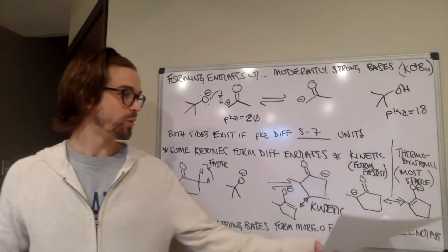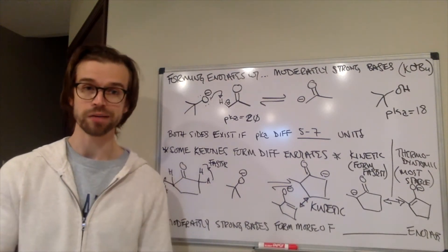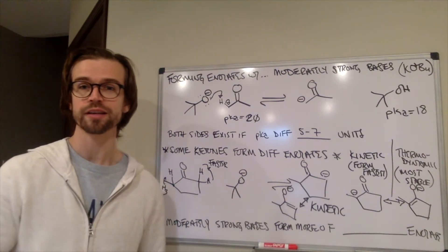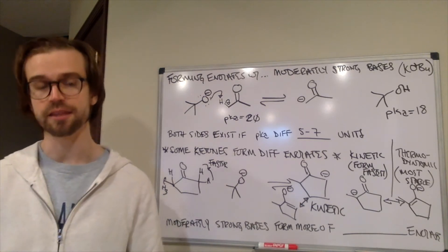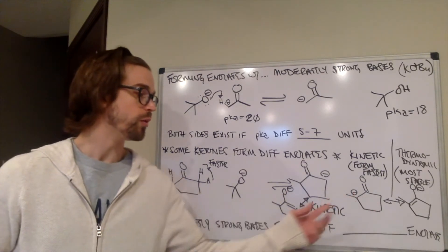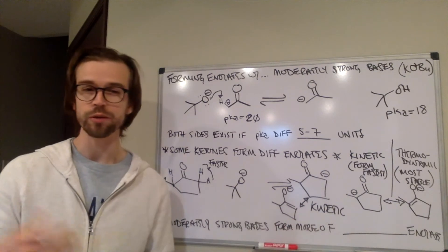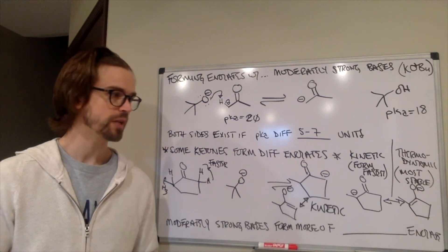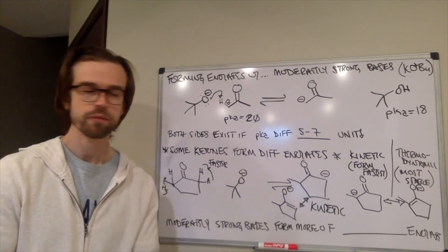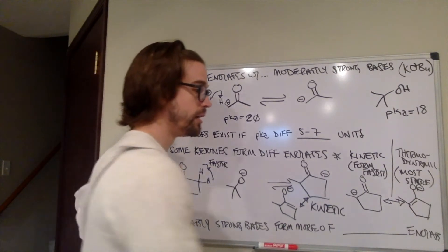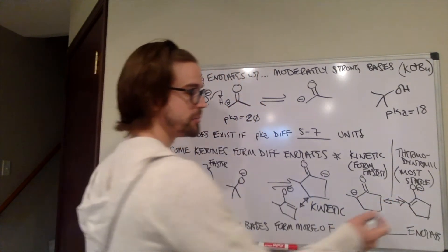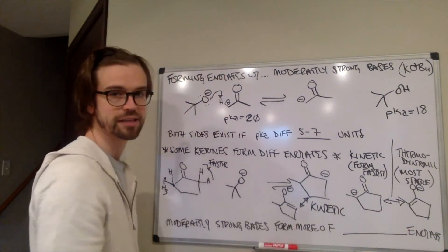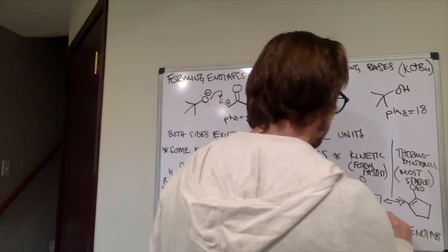So, at this point, why would this one be the thermodynamic? We talked previously when we were doing 1-2 versus 1-4 addition that sometimes the 1-2 product is both the kinetic and the thermodynamic enolate. So, which enolate, that one or that one, would you expect as the thermodynamic enolate? And give yourself a reason why. Okay. So, hopefully you said this is the thermodynamic enolate. And the reason why is because it's a more substituted alkene. This is a tri-substituted alkene. This is a di-substituted alkene. So, this is the thermodynamic enolate.